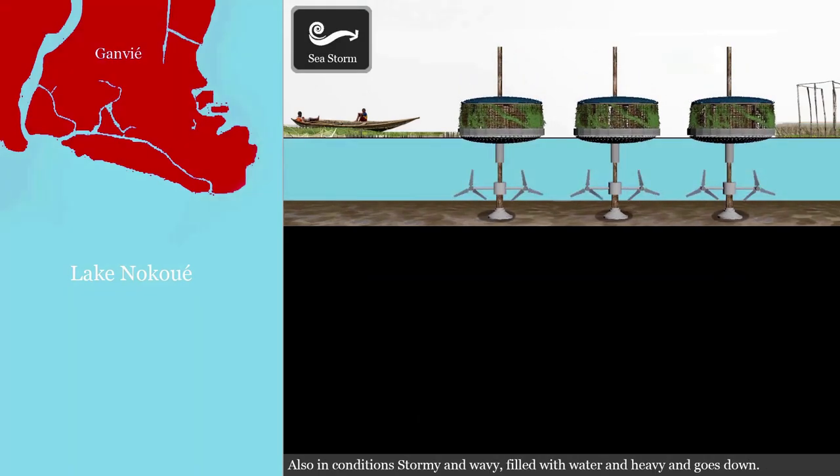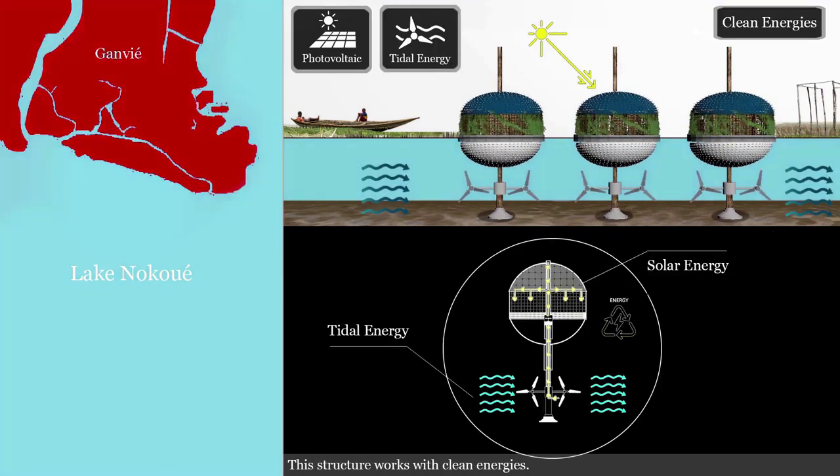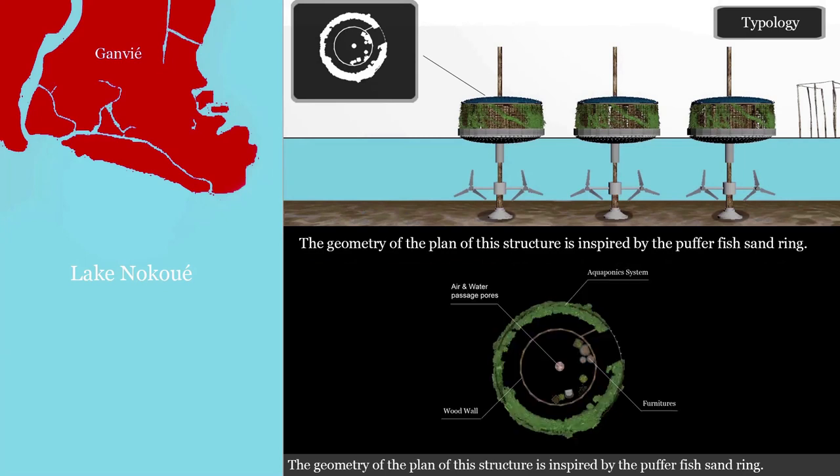Also in stormy and wavy conditions, they fill with water and become heavy and go down. This structure works with clean energies. The geometry of the plan is inspired by the puffer fish structure.